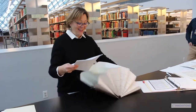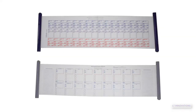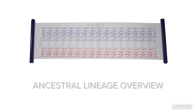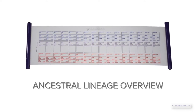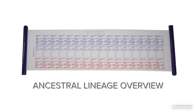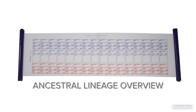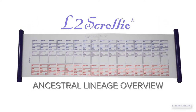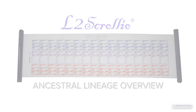To cut through all of this confusion I created two L2 Scrolio designs with slightly different focuses. What you're looking at now is the Ancestral Lineage Overview. Here's how you manage the process of getting to a society application like a real boss.